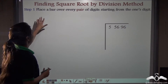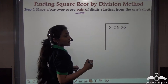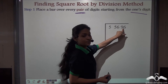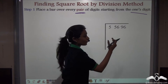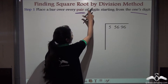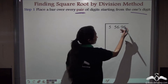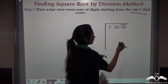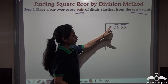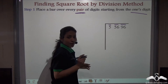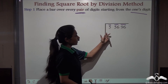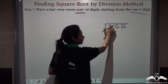The first step is to place a bar over every pair of digits starting from the ones digit. The ones digit here is 6, so we start placing bars from this side over two numbers together. Place a bar over the first pair, then the second pair. The remaining number is left as a single digit, so we place a bar over it too. Remember: always start from the ones digit, and if one digit is left without a pair at the start, place a bar over it as well.